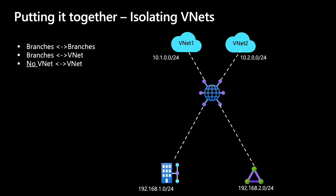Let's put it together. Here, we are going to isolate VNets. The requirements are: branches need to be able to reach other branches, branches need to be able to reach VNets, and VNets need to be able to reach branches, and the VNets cannot talk to each other — in other words, they need to be isolated.